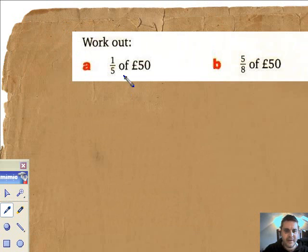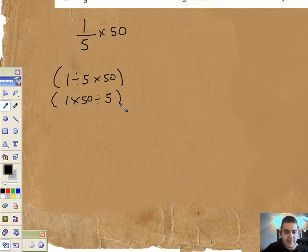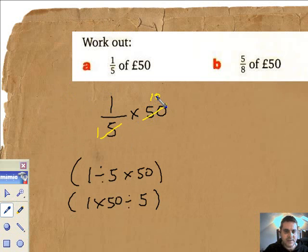It says work out 1/5 of £50. So we have 1 divided by 5, of means times, and 50. This is a calculator unit. You can say 1 divided by 5 then times by 50, or 1 times 50 and then divide by 5. Or we can just work it out: 5 goes into 50 ten times, 1 times 10 equals 10. So a fifth of £50 is clearly £10.